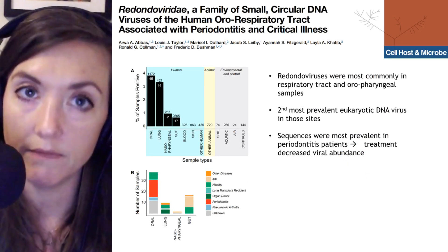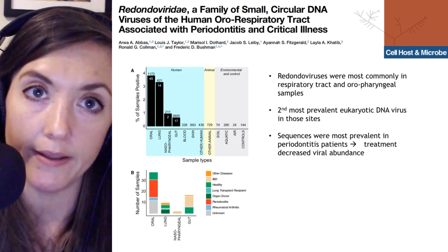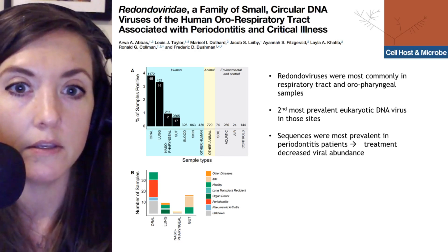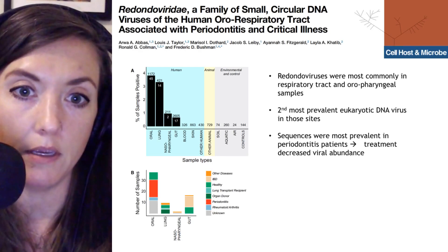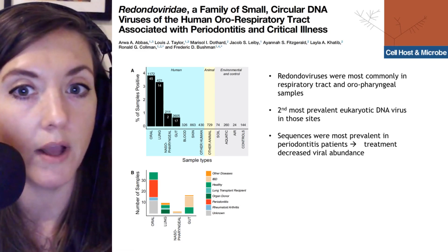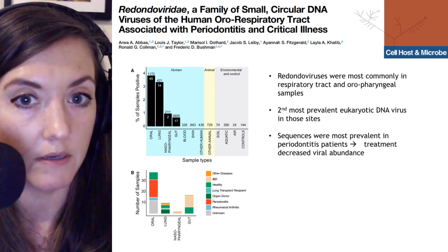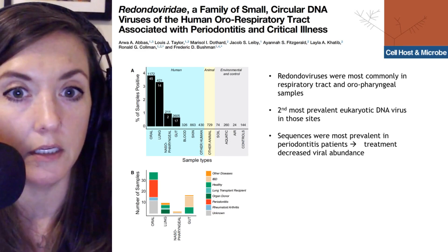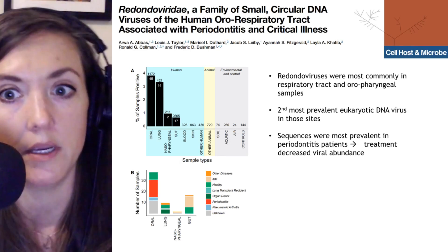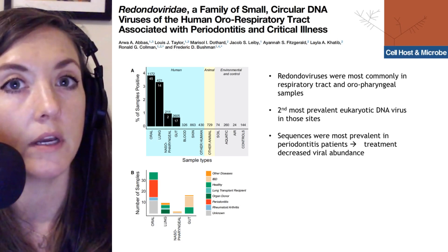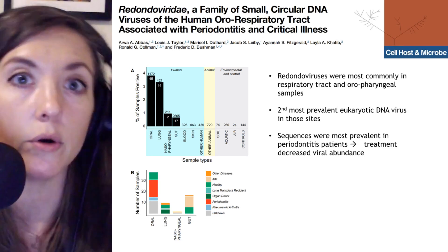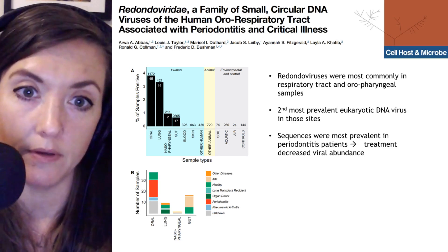Very interestingly, all of this was done simply by looking at sequences without actually culturing the virus itself. Looking at the identified viruses and where redondoviruses were found, they were not found in animal or environmental studies but were found predominantly in human samples. Within the different human niches interrogated, redondoviruses were most commonly found in respiratory tract and oropharyngeal samples.